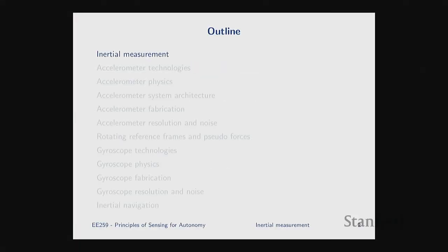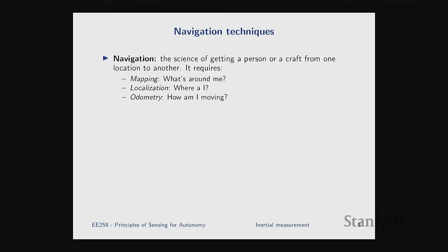When we talked about navigation, we said you need three things: mapping, localization, and odometry. GPS is a sensor that helps a lot with localization and also provides limited odometry — you can get your velocity from GPS signals.